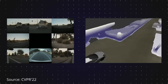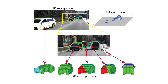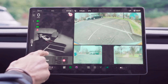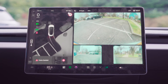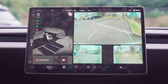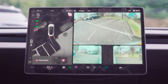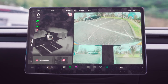Unlike traditional methods, occupancy networks evaluate every voxel — a three-dimensional pixel — around the car to determine its occupancy status, assigning a probability of whether each voxel is occupied or not, resulting in a cohesive and consistent 3D output space without the need for stitching together independent predictions.